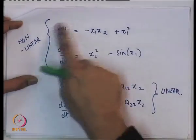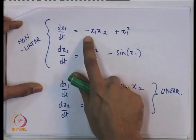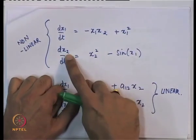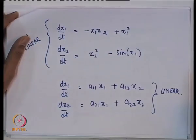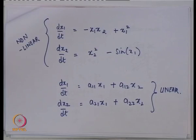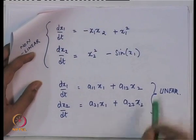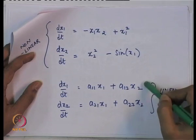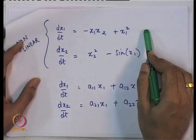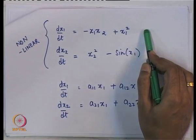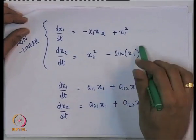You can have higher-order non-linear systems: for example, x1_dot = -x1·x2 + x1² and x2_dot is again dependent on x1. In general, a higher-order linear system is written as x_dot = A·x, where A is a matrix and x is a vector. You could also have inputs: x_dot = A·x + B·u, where u is an input like P_m in our single-machine infinite-bus system. Without an input it is called an autonomous system.